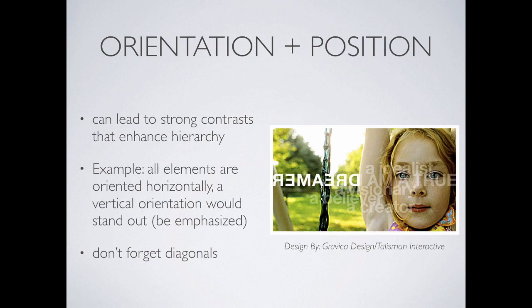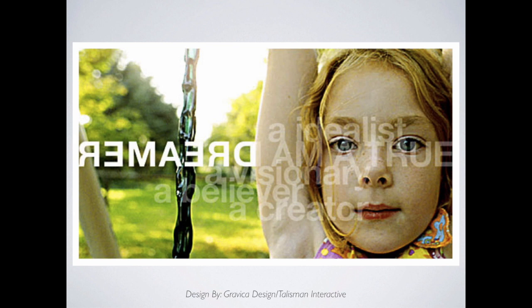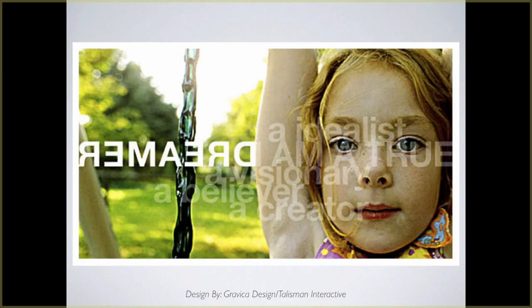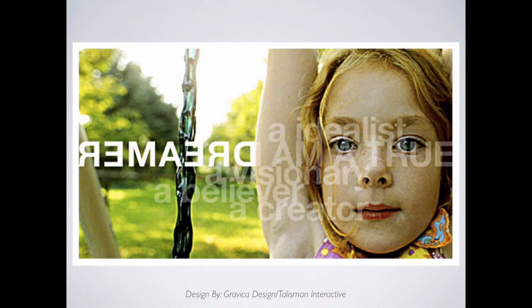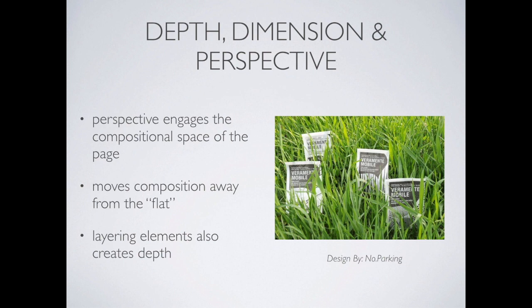Orientation and position are important — if all your elements are horizontal and you throw in one vertical element, you get a focal point and contrast. Diagonals can work nicely as well. In this image example, all the text is horizontal, even the image is fairly horizontal, and then there's a really strong vertical element where the text flips backwards — that contrasting line creates the focal point. Depth, dimension, and perspective is also a way to compose in three dimensions: elements stacked behind others, with what's most important in front, and layering can create depth even in a flat layout.